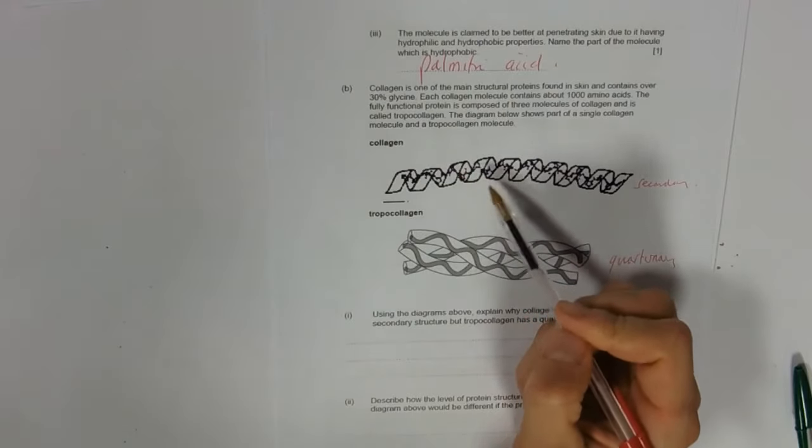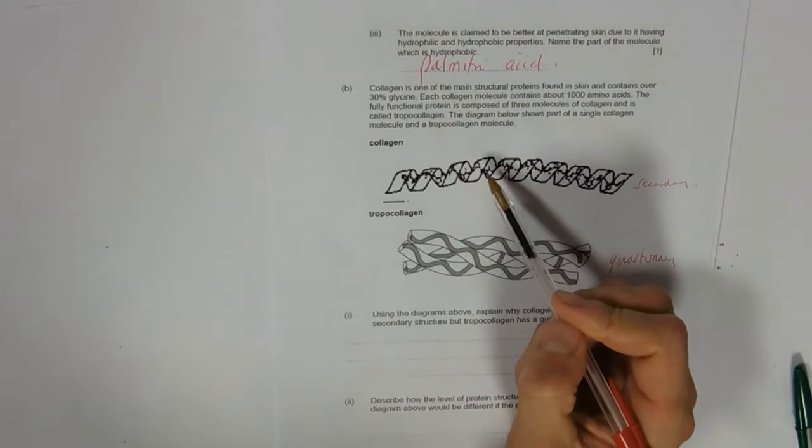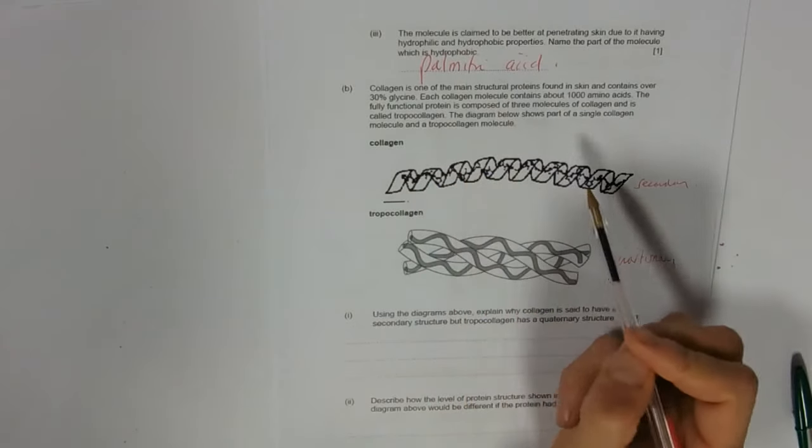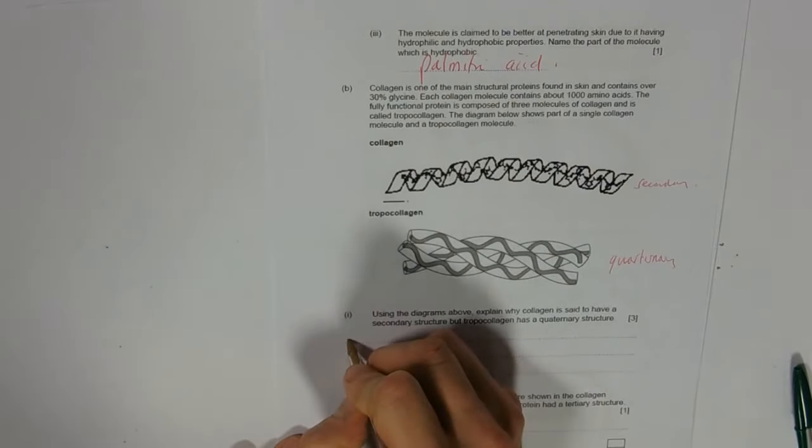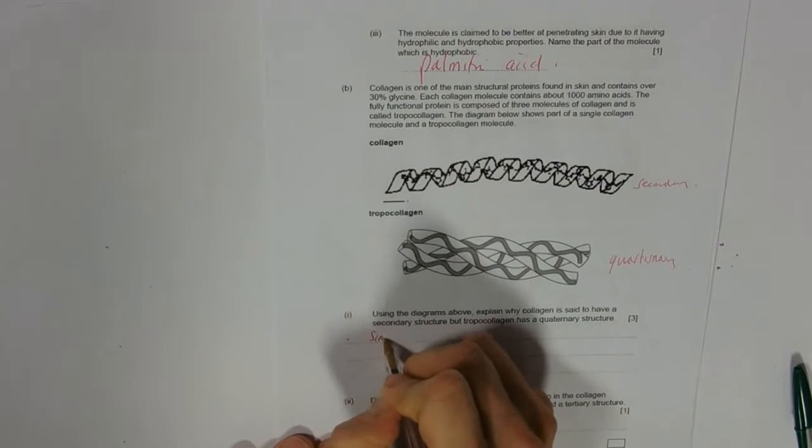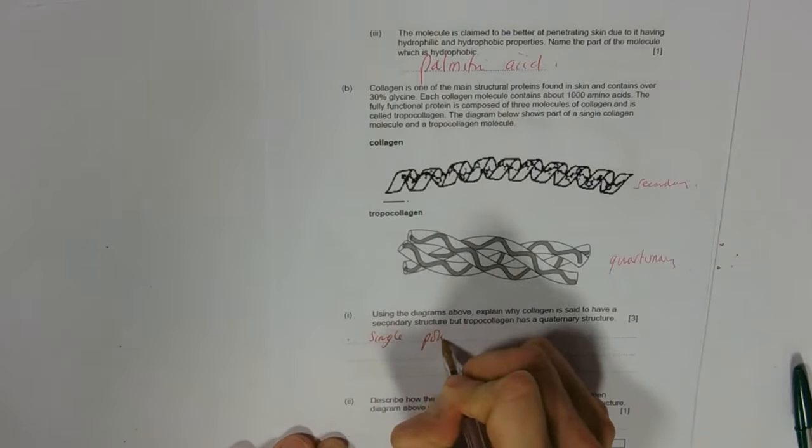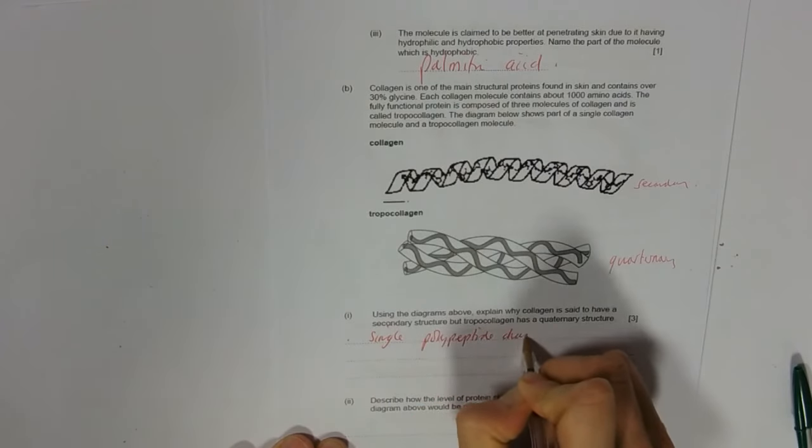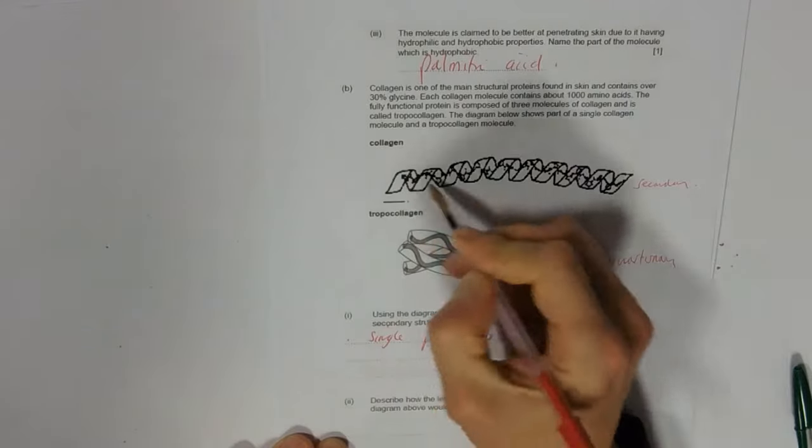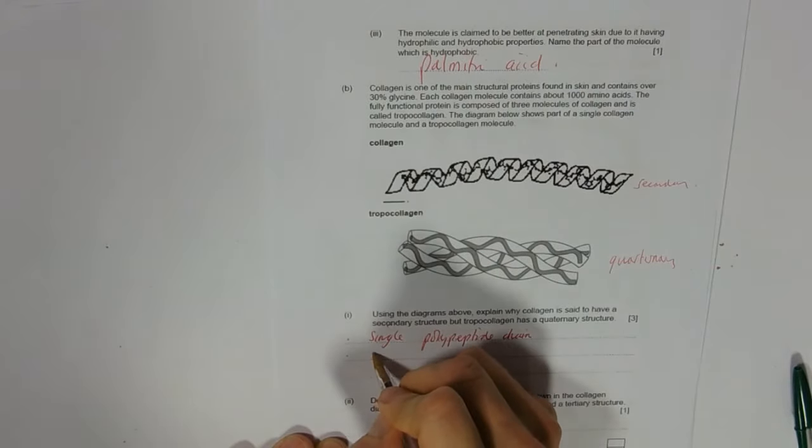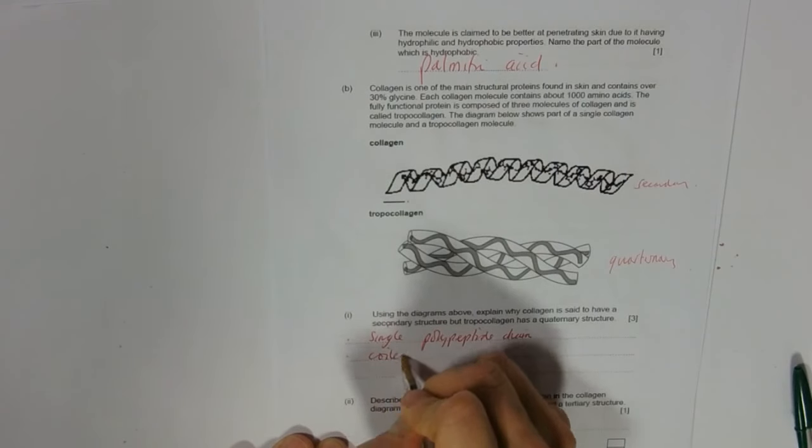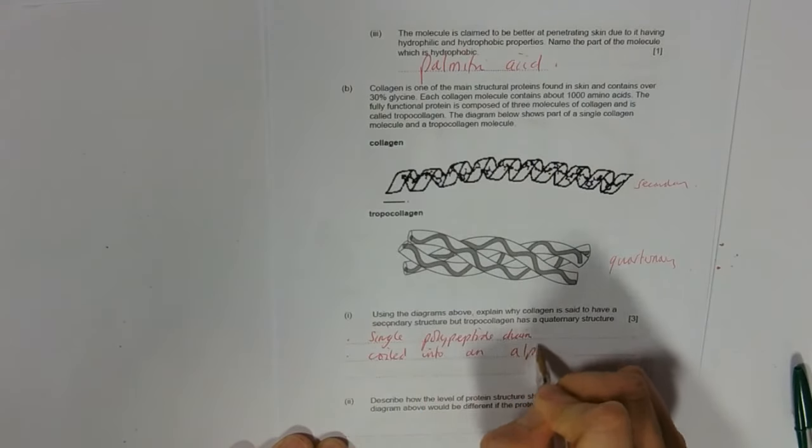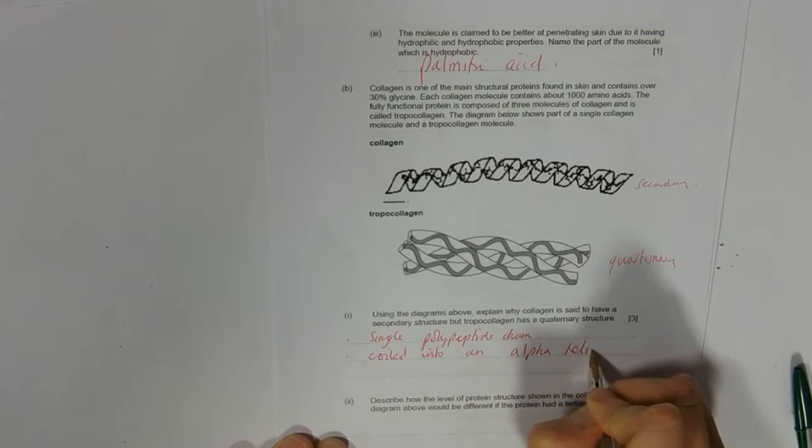So single polypeptide chain there it is, and it's coiled into an alpha helix. And that is for collagen.